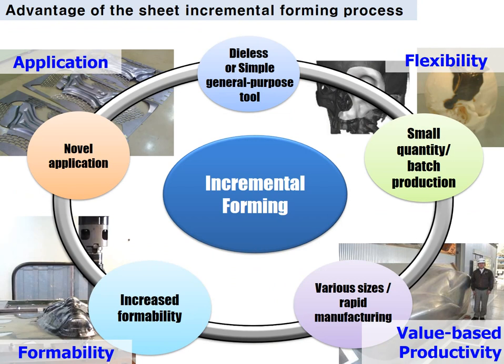The advantages of the sheet incremental forming process are: first, increased formability — it improves formability compared to other forming processes. The incremental forming process also has advantages in product variety and flexibility. Small quantity and small batch production is well-suited to this process. Also, it does not require a dedicated die set. As a result, the sheet incremental forming process has many applications.